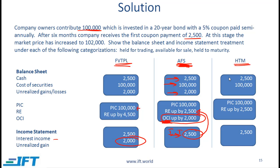With held to maturity, treatment is simplest because we completely ignore any unrealized gains. Cash goes up by 2,500 from the coupon received. The cost of the security is shown at 100,000 with no unrealized gains recorded. Paid-in capital is 100,000 and retained earnings of 2,500 come from the interest income generated, assuming all income is retained.